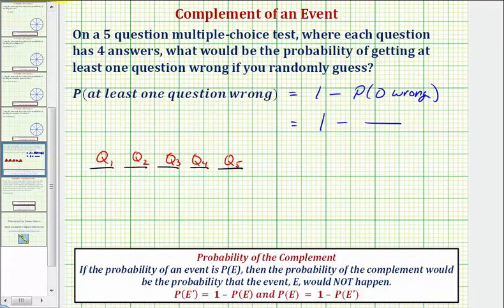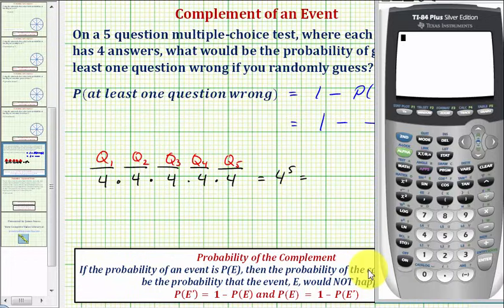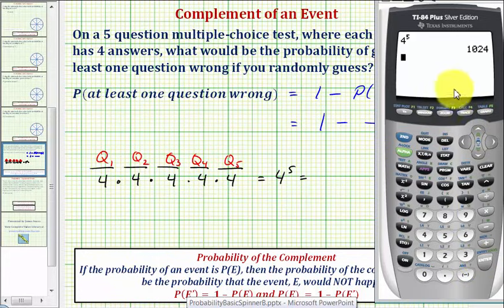Well each question has four answers, so there are four possible outcomes for question one, four possible outcomes for question two, and so on. So the total number of outcomes is four to the fifth, which equals 1,024.